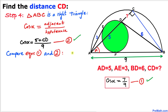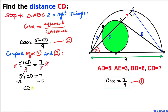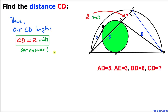Comparing Equation 1 and Equation 2, the left-hand sides are the same, so the right-hand sides must be equal: (5 + CD) / 9 = 7/9. Multiplying both sides by 9: 5 + CD = 7. Subtracting 5 from both sides, CD = 2 units. That is our final answer.